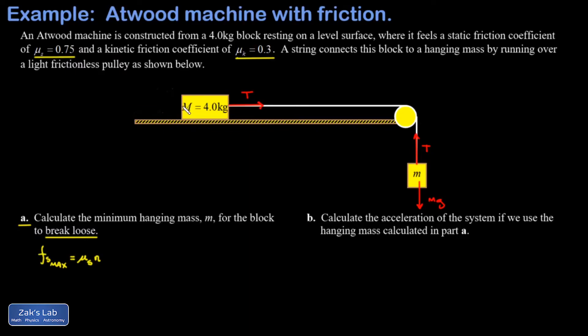The tension in the string is the same at the other end. The reason this block is not accelerating in the static friction case is that my static friction force is balancing the force of tension by pointing to the left. Then gravity pulls down on this big M with a force of big M times g.